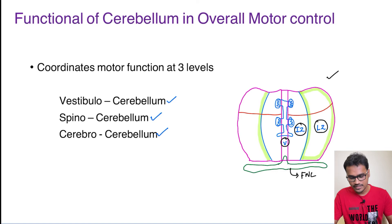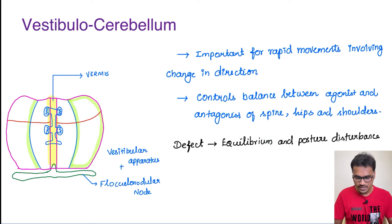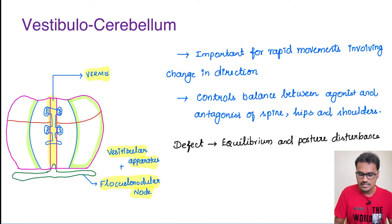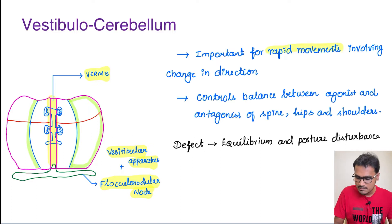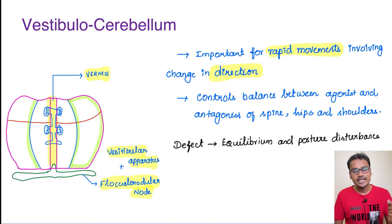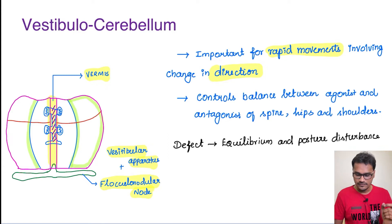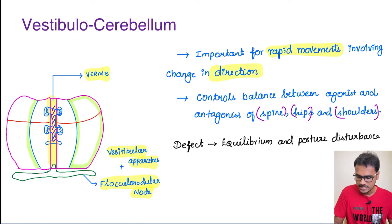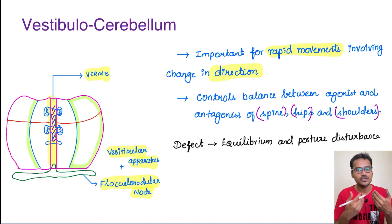Coming to the functions of each division, let us start with the vestibulocerebellum. As the term indicates, it includes the vestibular apparatus along with the cerebellum — that is the flocculonodular lobe and another region, the vermis in the cerebellum. It is important for very rapid movements, especially during a directional change, because the directional change will be detected by our vestibular apparatus and it will instruct the cerebellum so that the appropriate actions can be taken. The vermis is involved in controlling the central region — the spine, hip, and shoulder — because it has a homunculus representation similar to that of the cortex.